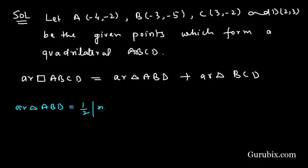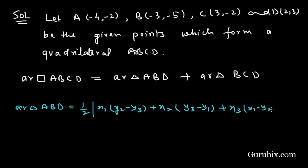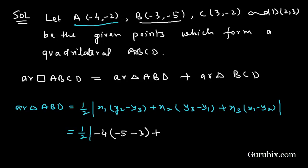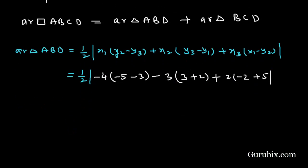Using the formula: area = (1/2) |x1(y2 - y3) + x2(y3 - y1) + x3(y1 - y2)|. For triangle ABD: x1 = -4, y2 = -5, y3 = 3; x2 = -3, y3 = 3, y1 = -2; and x3 = 2 (the x-coordinate of point D), y1 = -2, y2 = -5.